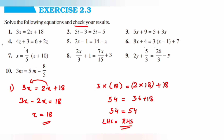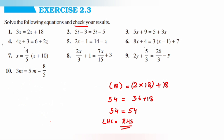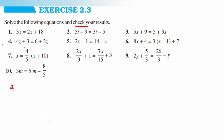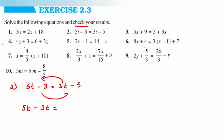Now we'll go to the second question: 5t minus 3 is equal to 3t minus 5. We need to find the value of t. Transpose 3t to the left side and minus 3 to the right side, keeping all variables together and all constants together. We get 5t minus 3t is equal to minus 5 plus 3, giving 2t is equal to minus 2, so t is equal to minus 2 divided by 2, which gives t is equal to minus 1.